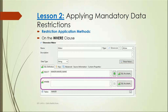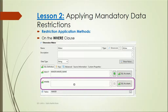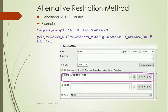For applying mandatory data restrictions on the business layer, when we create a dimension you can see the dimension editor window, which has a SELECT field and below it a WHERE option. In this WHERE block we can put conditions — for example, if we just want to display data for the country US, we can make the condition as country equals US in the WHERE block. This is one method: putting a restriction on the WHERE clause.